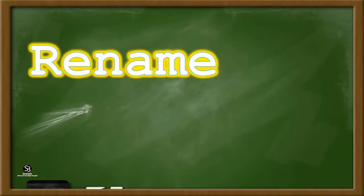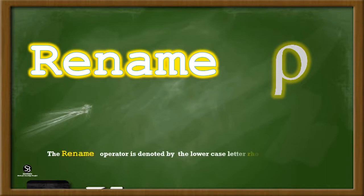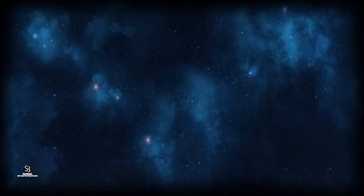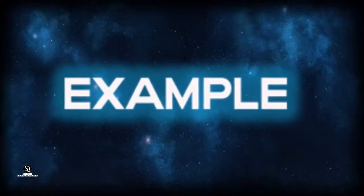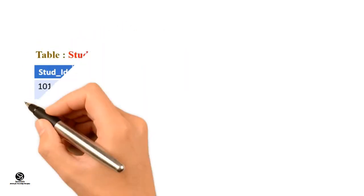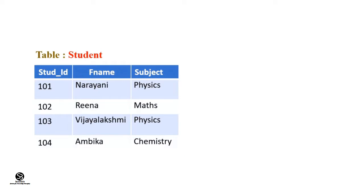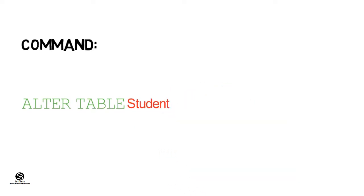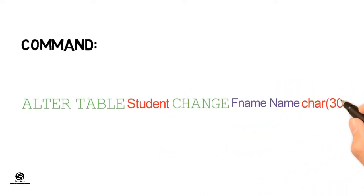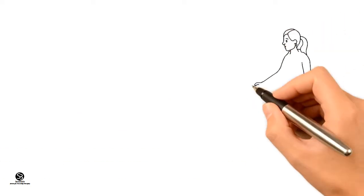Rename. The Rename operator is denoted by the lowercase letter Rho. It is used to rename the output table, i.e. relation. For example, suppose the class teacher decided to rename the attribute FName to Name. This can be implemented using the SQL command: ALTER TABLE Student CHANGE FName Name CHAR(30). The output table will have 'Name' as the changed attribute.